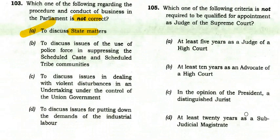Which criterion is not required for appointment as a judge of the Supreme Court? At least 5 years as judge of a High Court — criteria. At least 10 years as advocate of a High Court — criteria. In the opinion of the President, a distinguished jurist — criteria. At least 20 years as sub-judicial magistrate — this is not a criteria.